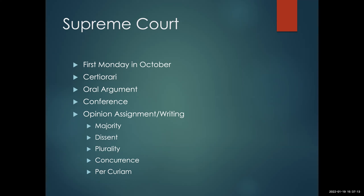The last type of opinion is called a per curiam opinion. Sometimes the justices don't feel the need to say a lot about a decision, so they write a per curiam opinion where we don't even know which justice wrote it. It's typically a very short statement saying, if you read the case we decided last term, you should know how this comes out. Per curiam opinions don't provide a lot of reasoning — they're just a way to resolve who wins and loses without getting into detailed analysis.